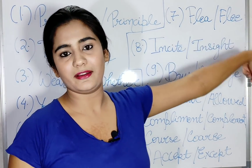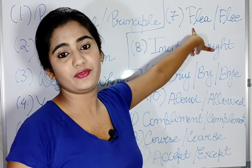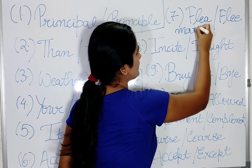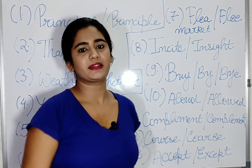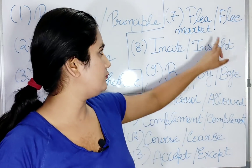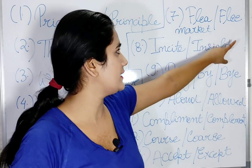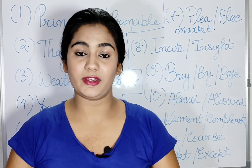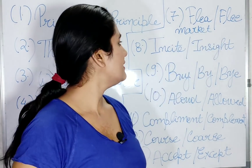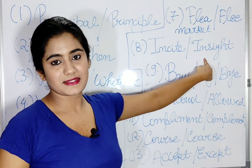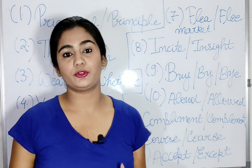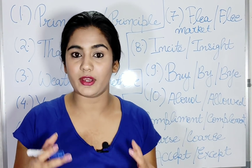The seventh word is 'flea' and 'flee.' Flea is mostly used with the word 'market' — a flea market. For example, Sarojini Nagar is a flea market. And 'flee' means to run away from somewhere — to escape. For example, 'I want to flee to a flea market.' Next is 'incite' and 'insight.' Incite means to provoke someone, while insight means to understand or deeply comprehend something.